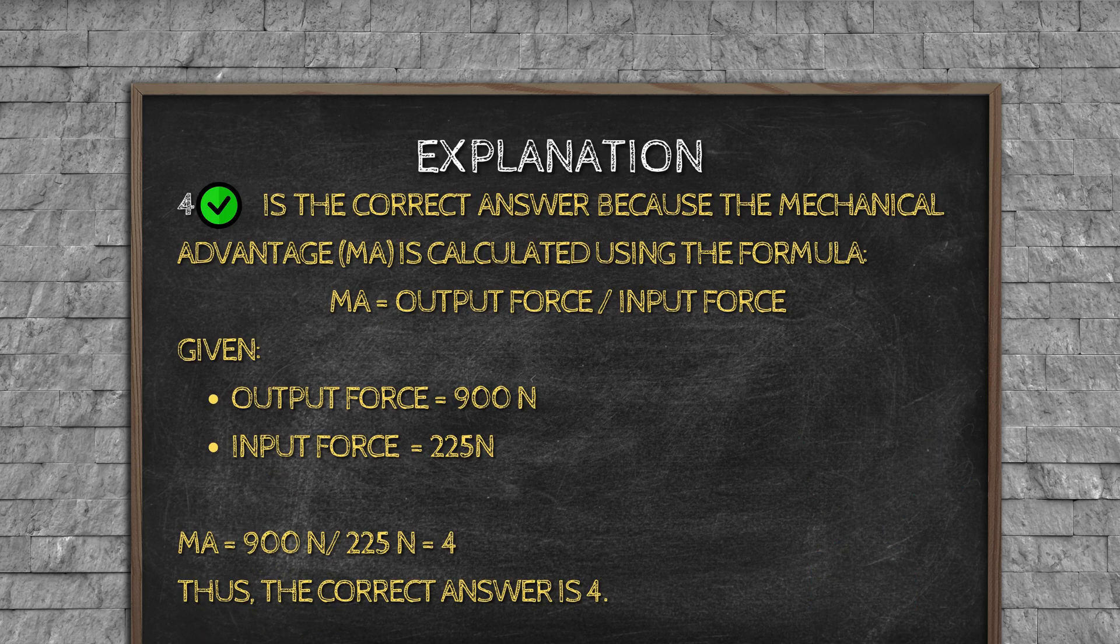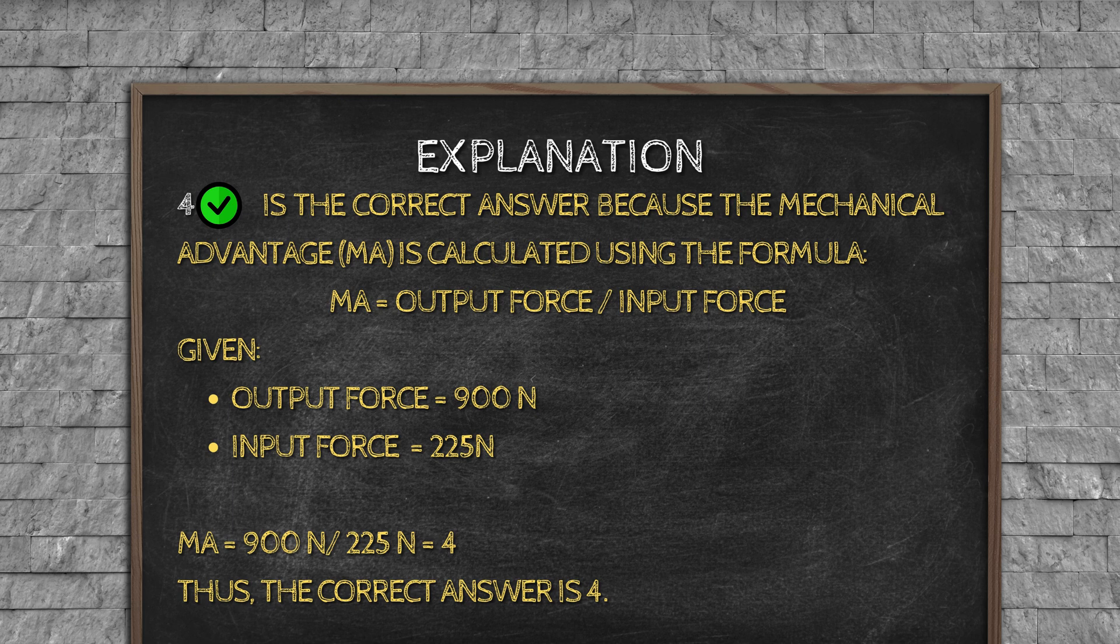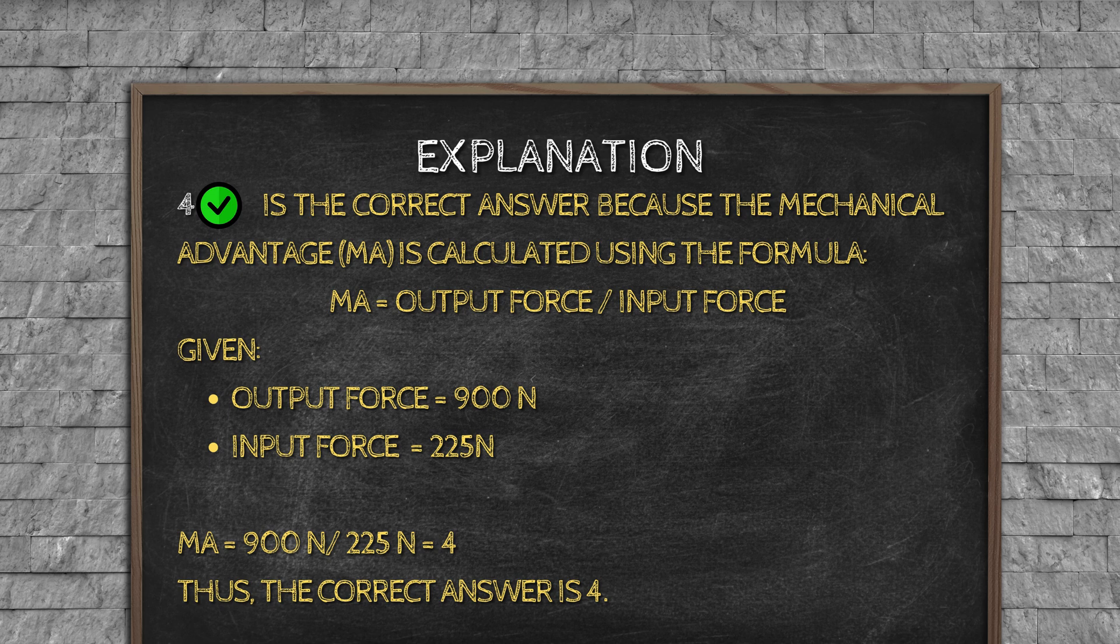Explanation: 4 is the correct answer because the mechanical advantage (MA) is calculated using the formula MA equals output force slash input force. Given output force equals 900 newtons, input force equals 225 newtons. MA equals 900 newtons slash 225 newtons equals 4. Thus, the correct answer is 4.